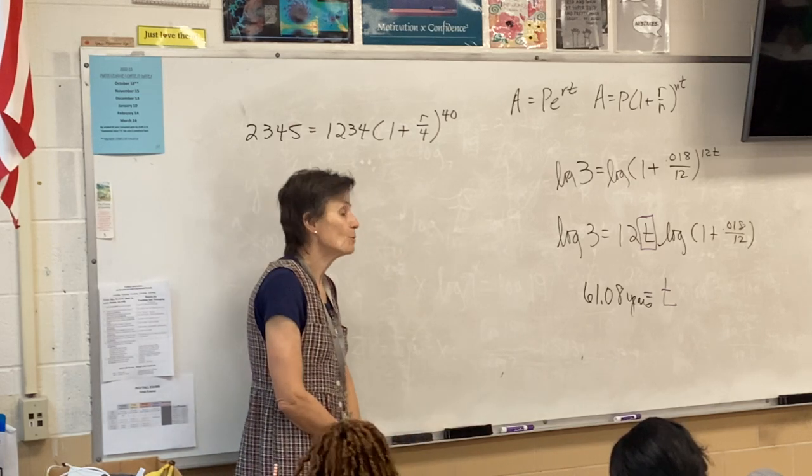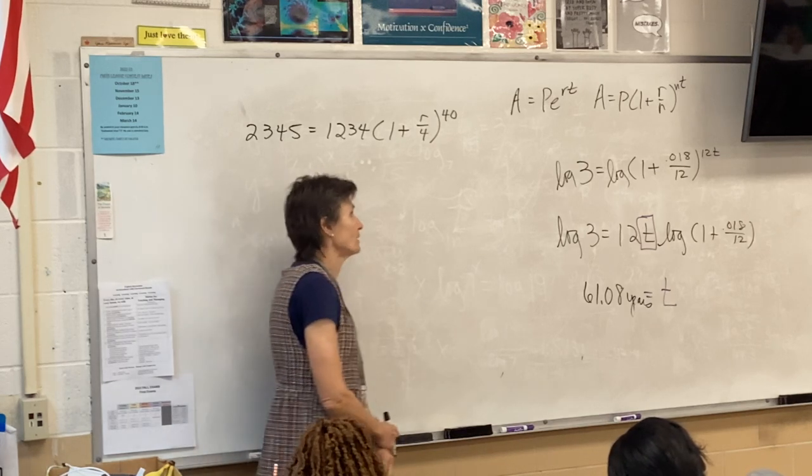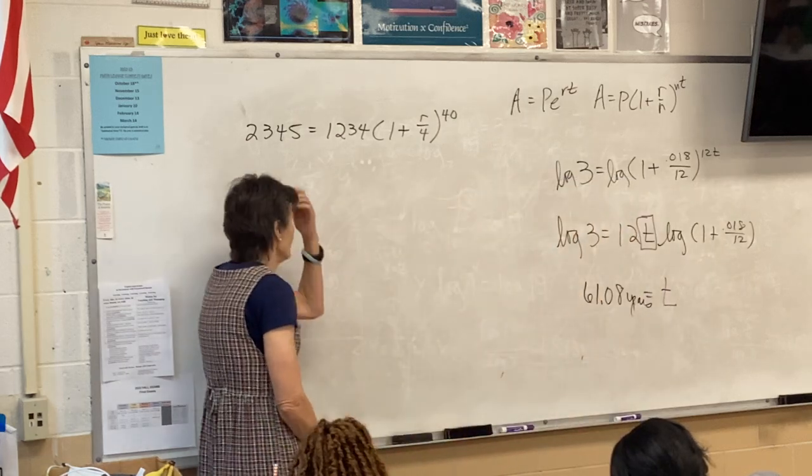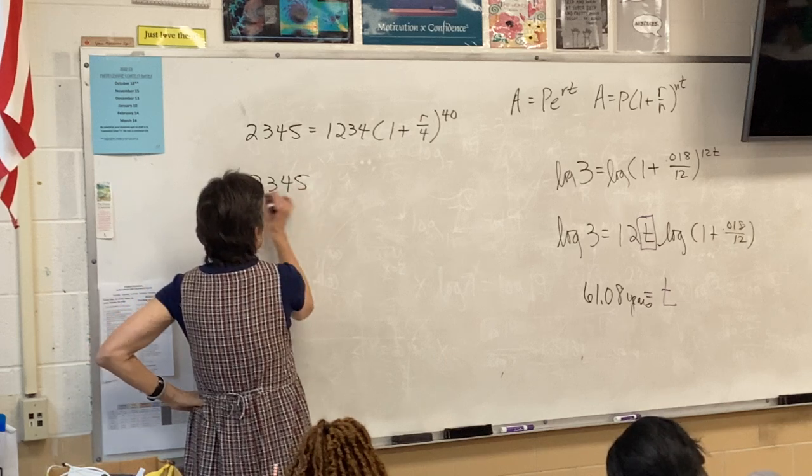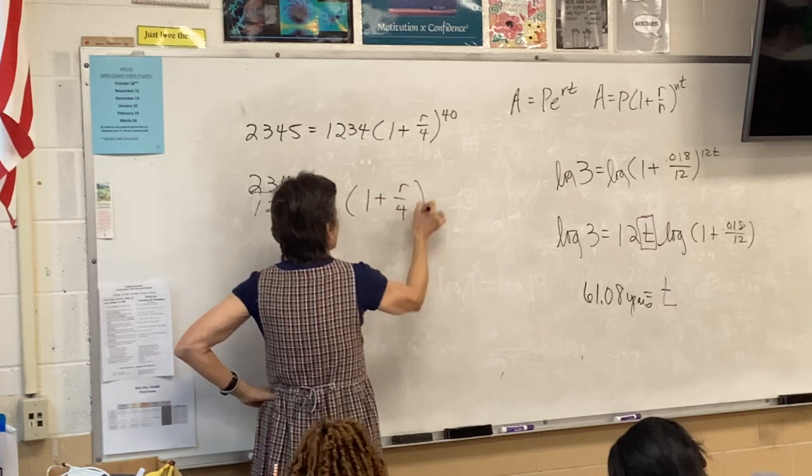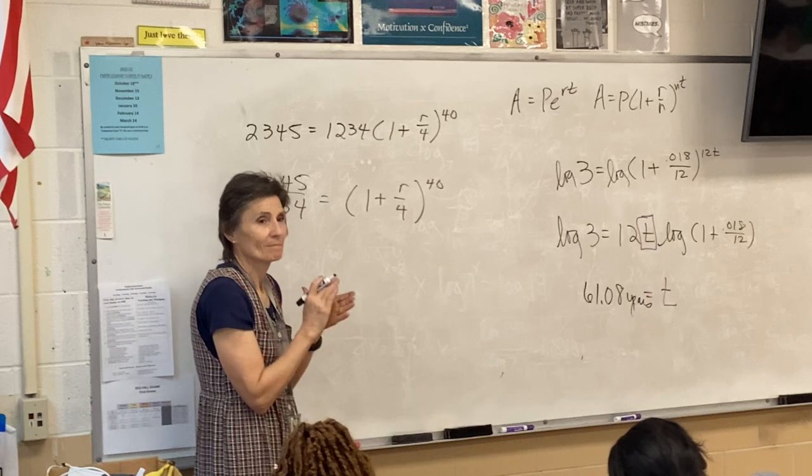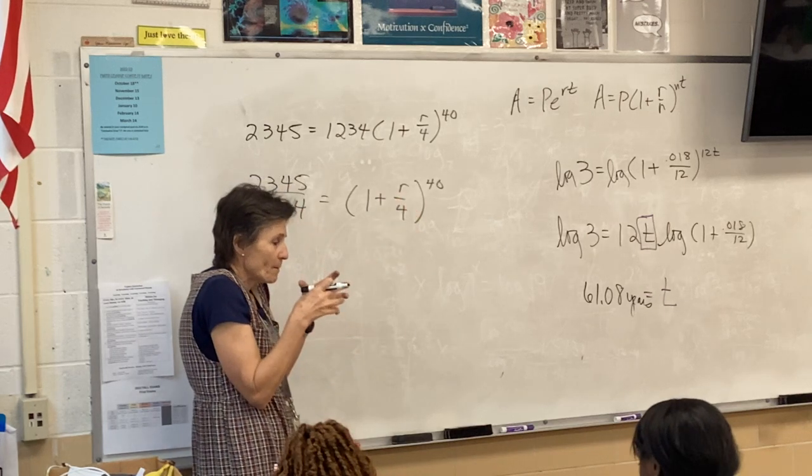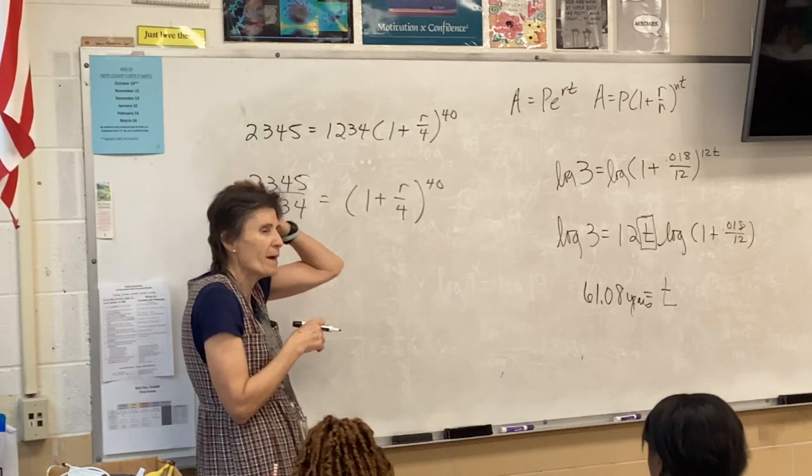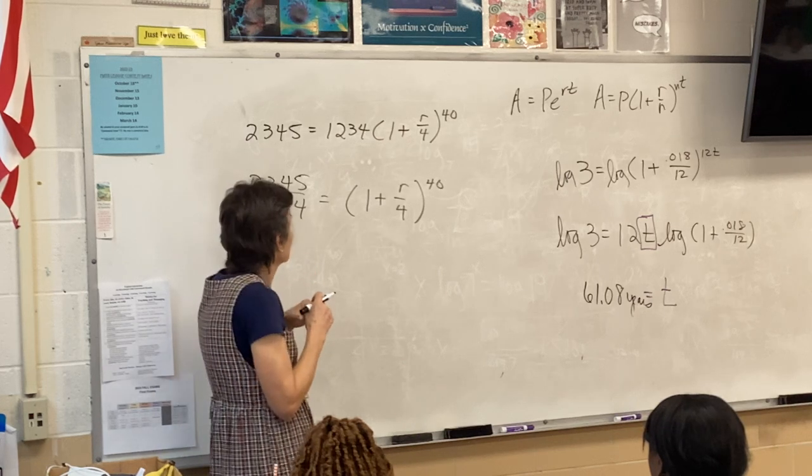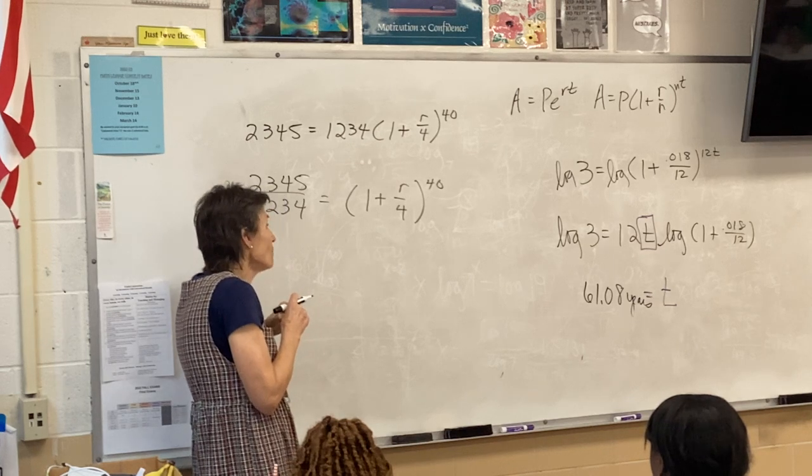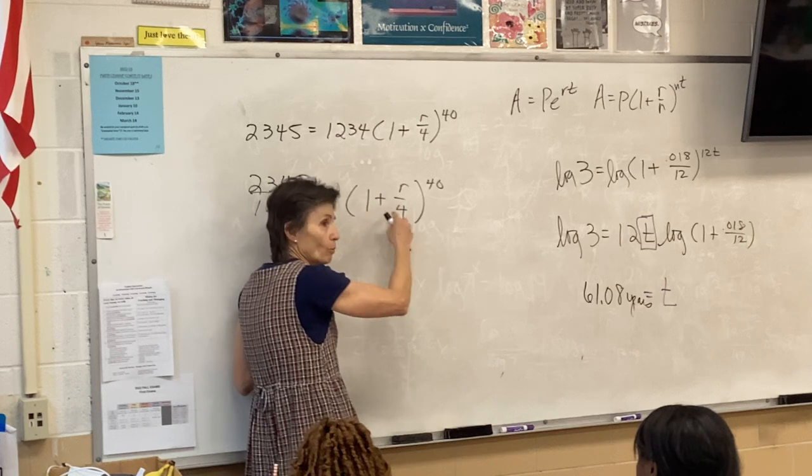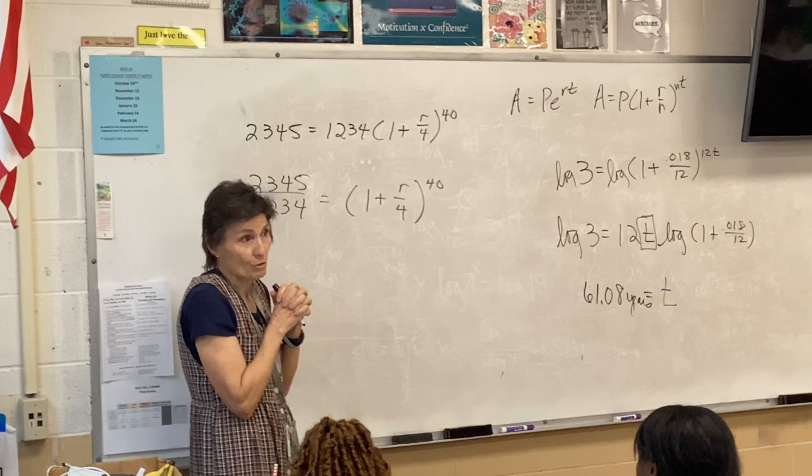How are we going to start the problem? 2345 divided by 1234 equals 1 plus R over 4 to the 40th. What do I have to do now? R is buried in a parenthesis that's being raised to the 40th power. Think about this. How did you solve an equation that looked like A equals R squared? You square rooted it. So to get rid of this so that you could solve for R, you square rooted it. Well, I am not going to square root those sides. I am going to 40th root those sides.